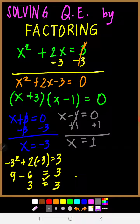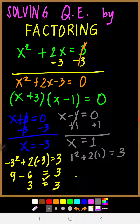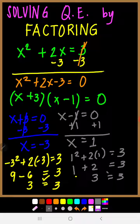Now let us check x equals 1. Substituting into x squared plus 2x equals 3: 1 squared plus 2 times 1 equals 3, which gives 1 plus 2 equals 3, so 3 equals 3. Therefore, x equals 1 is also a correct answer.